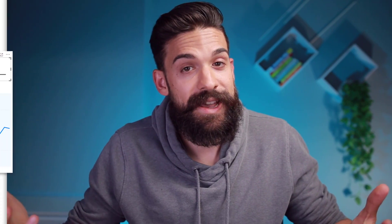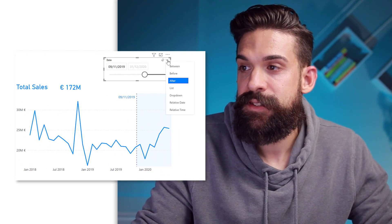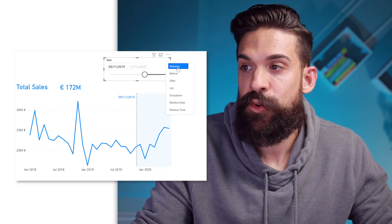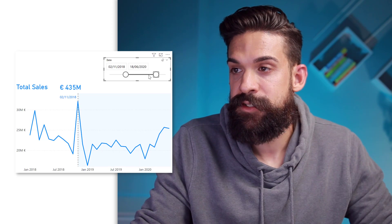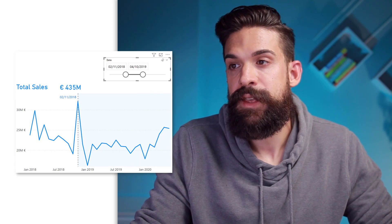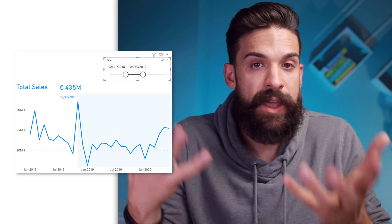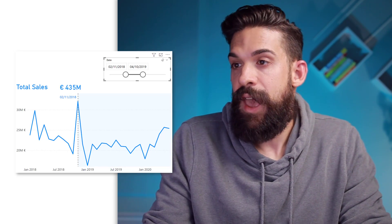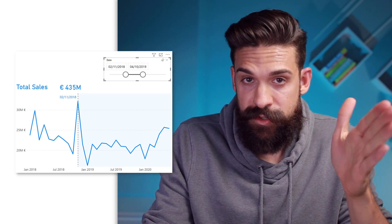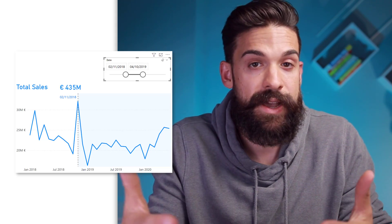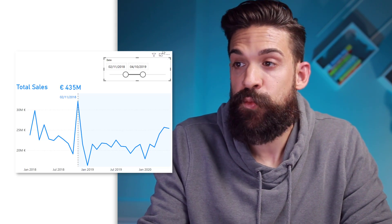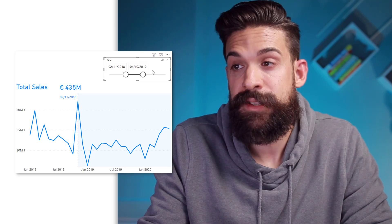Instead of having only a start date, we can also add an ending date. So let's go back to our slicer and change it from an after to a between slicer, so we can also choose the ending date. Now we can set the ending date by doing kind of the same thing as before — we have the first constant line for the starting point, and now we're going to add a second constant line. But there's no measure yet that figures out what the ending date is from the slicer, so let's add that one first.